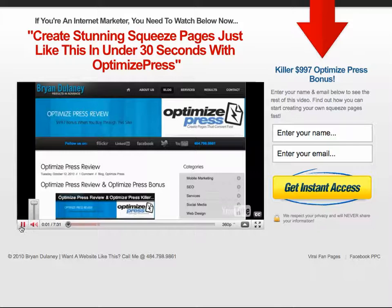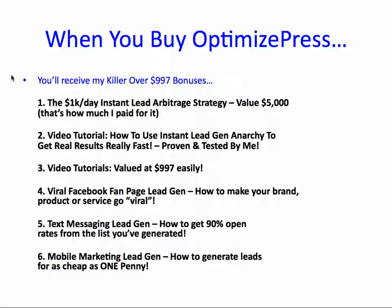That's it for this video. When you buy OptimizePress, you'll receive my killer over $997 in bonuses. The very first video you're going to get is the $1,000 per day instant lead arbitrage strategy, valued over $5,000 — because that's how much I paid for it. This bonus alone is worth the investment in OptimizePress. I paid $5,000 for it, and if I were to resell it I would sell it for $2,000. So for $197 or even $97 for OptimizePress, you're getting a killer value.